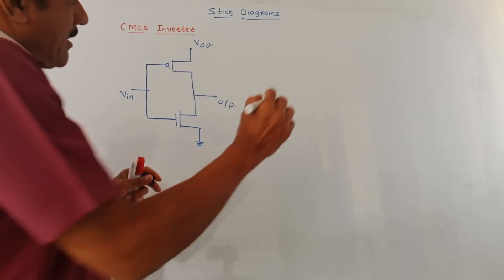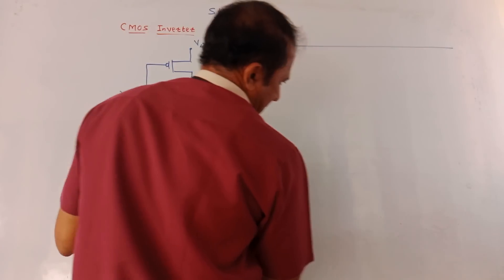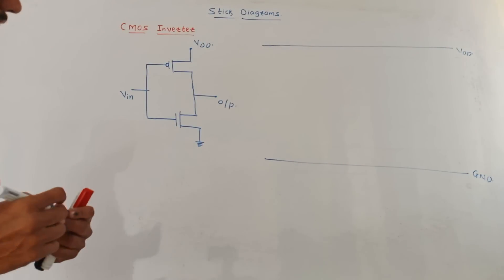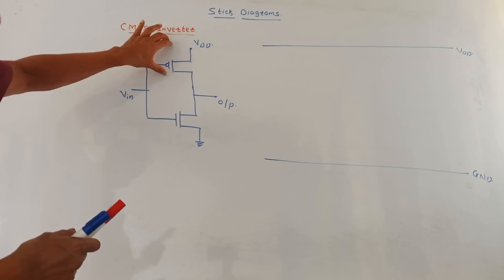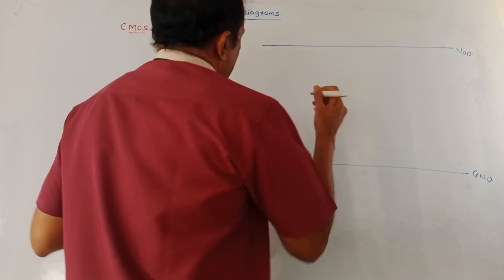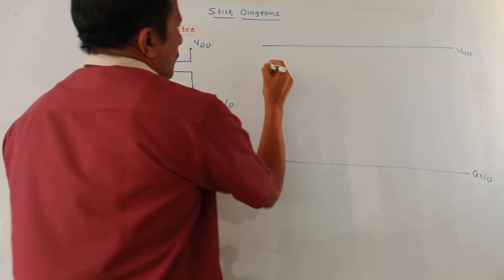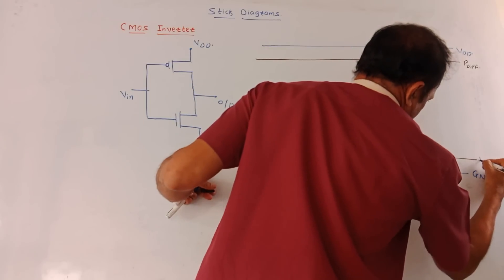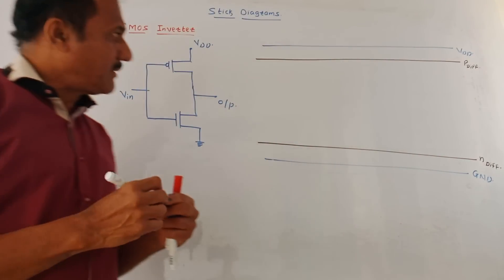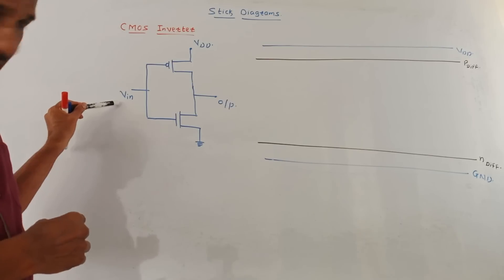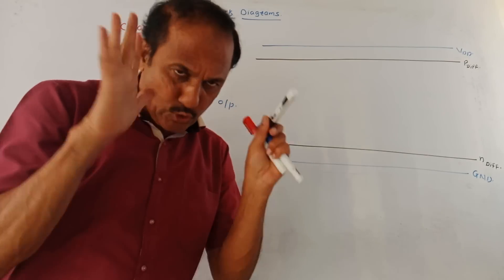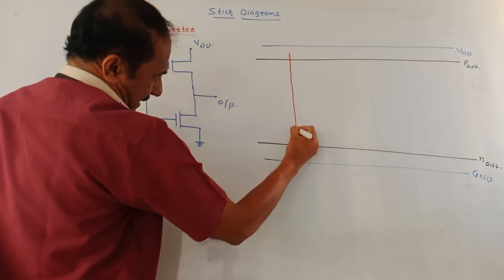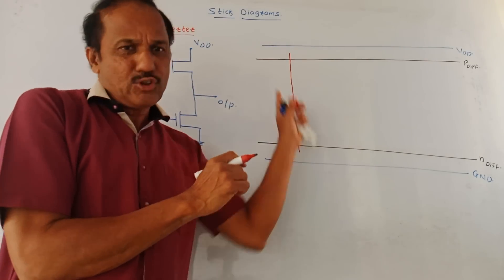Now the most important part: how to draw the STICK Diagram from this circuit. First, mark two horizontal lines — the upper horizontal line is VDD and the lower horizontal line is ground. We have two MOSFETs: one PMOS and one NMOS. For the PMOS, draw one P Diffusion layer. At the lower side, draw an N Diffusion layer for the representation of NMOS. Since there is only one input, I need one polysilicon layer — mark it vertically crossing both diffusion layers.